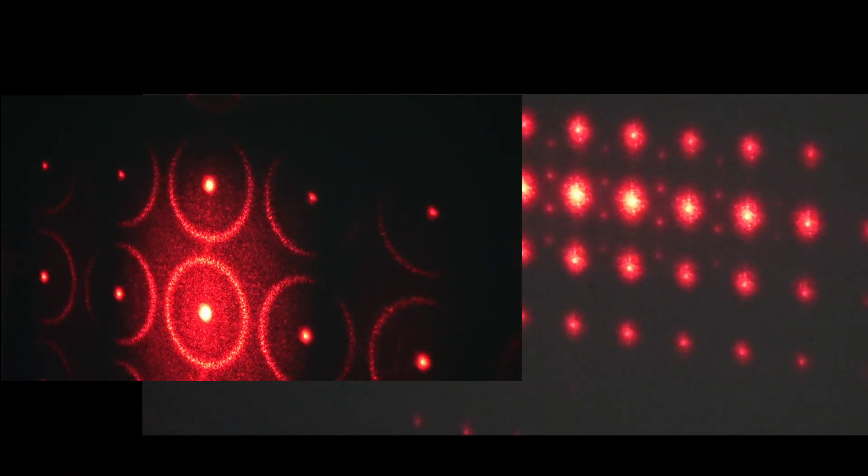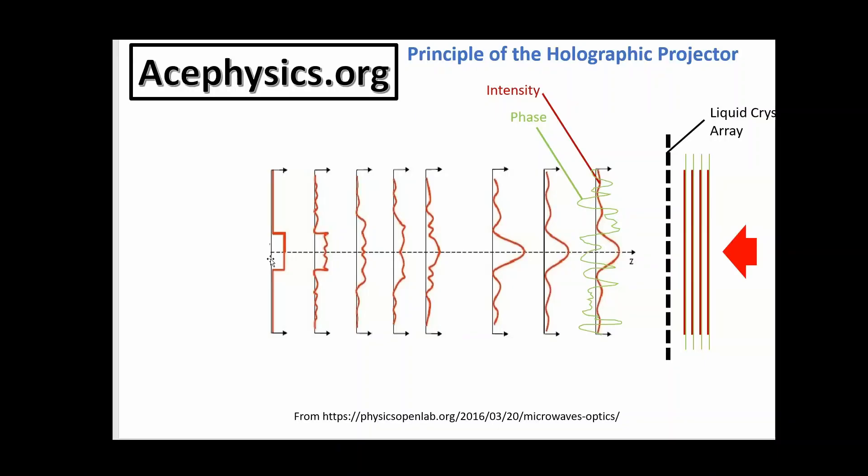This is called holographic because the principle of modulating phases across a wavefront to recreate the far-field wavefront from a shape, that is the principle that's used in an ordinary hologram. This is a little bit different from an ordinary hologram, only in that in a hologram, you generate a virtual image.